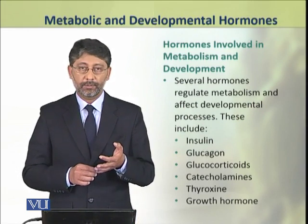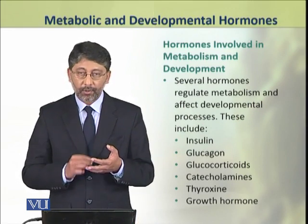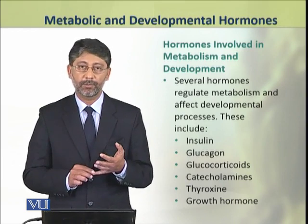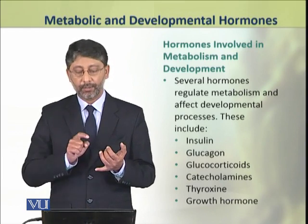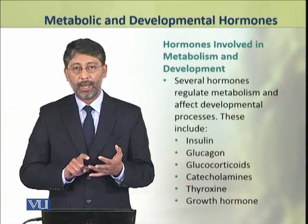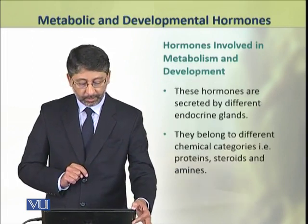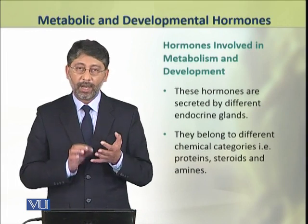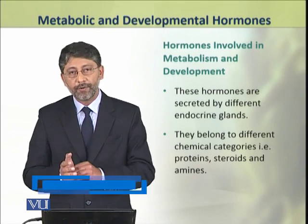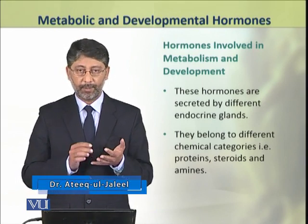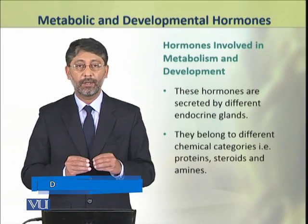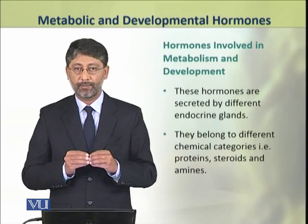Several hormones that we have studied so far are involved in the regulation of metabolism and developmental processes. These hormones include insulin, glucagon, glucocorticoids, catecholamines, thyroxine and growth hormone. These hormones are secreted by different endocrine glands and belong to different chemical categories — they may be proteins, steroids or amines — but all have their role in metabolism and development.